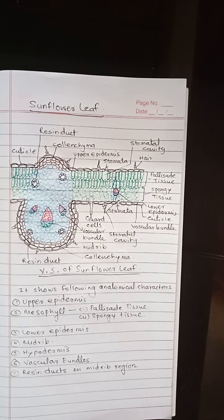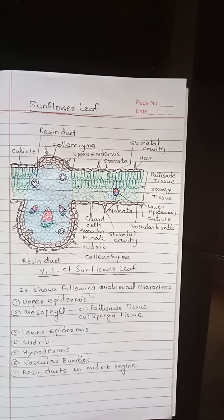In the mid rib region, the upper and lower epidermis are continuous as in the lamina. Two to three layers of parenchyma are more prominent below the upper and lower epidermis in the mid rib region.